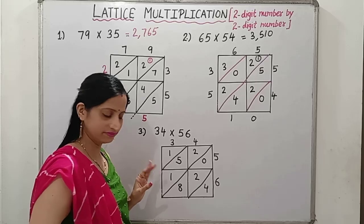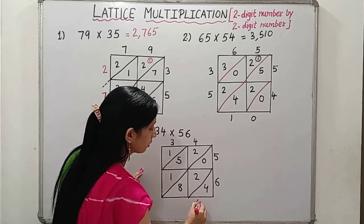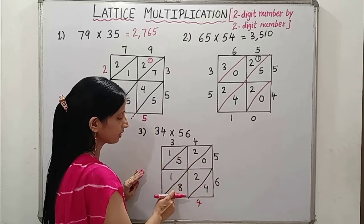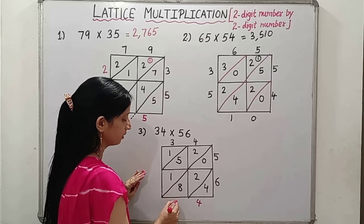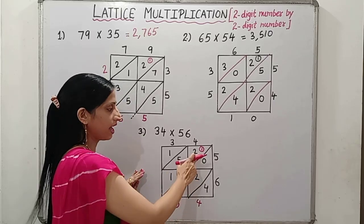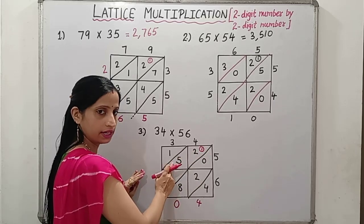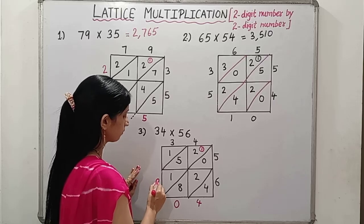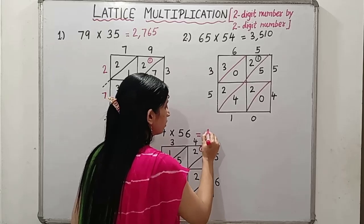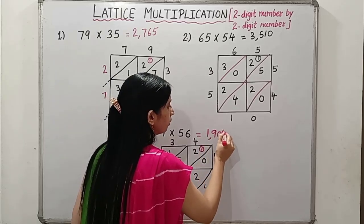Now, let's add. So what we will get here? 4 from first diagonal. In this, 0 plus 2 plus 8, 8 plus 2, 10. So 0 we will write, 1 we will carry over. 2 plus 1, 3. 3 plus 5, 8. 8 plus 1, 9. And 1 as it is. So what will be our answer? 1,904.